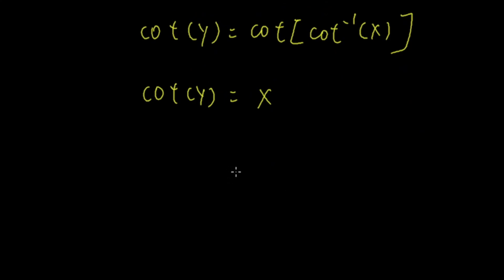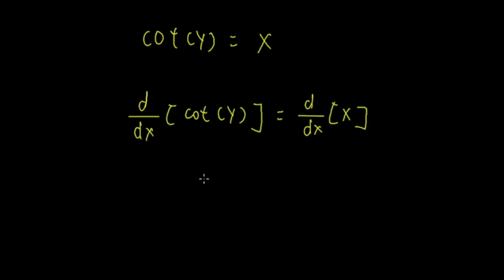Now I will take the derivative of both sides with respect to x. On the left side, the derivative of cot(y) is negative cosecant squared y. However, since we are taking the derivative of y with respect to x, we have to multiply by dy/dx. On the right side, the derivative of x with respect to x is just 1.